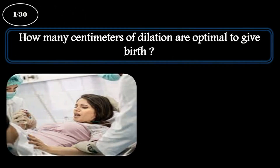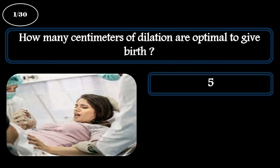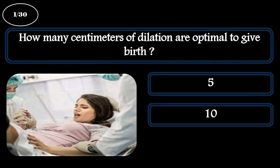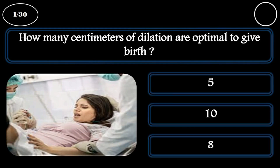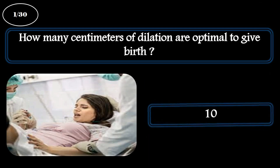Question 1. How many centimeters of dilation are optimal to give birth? A: 5. B: 10. C: 8. The correct answer is 10.